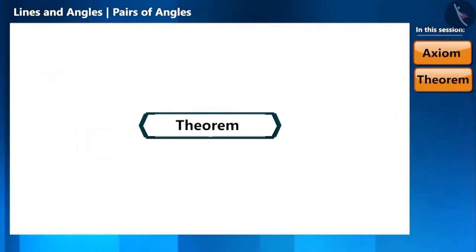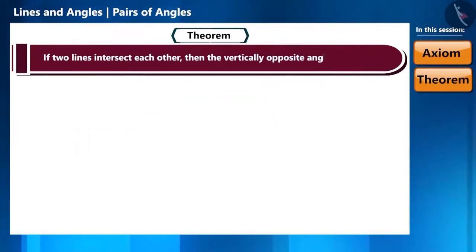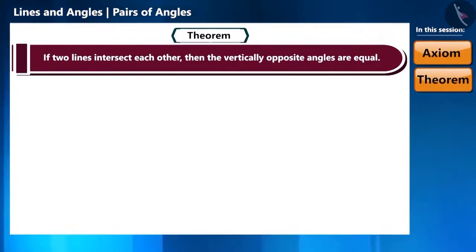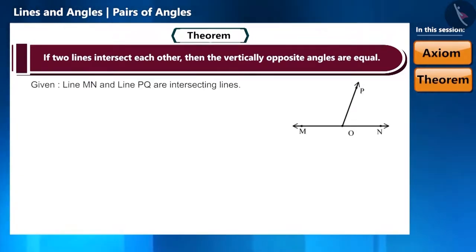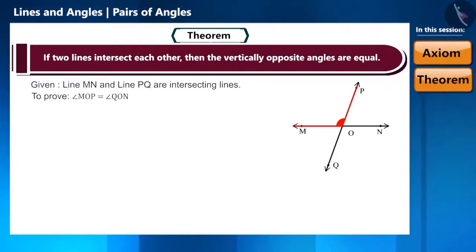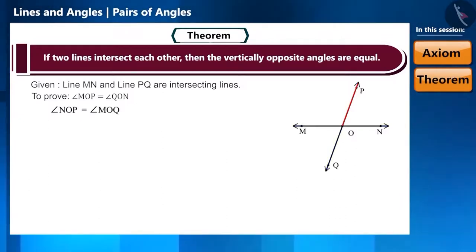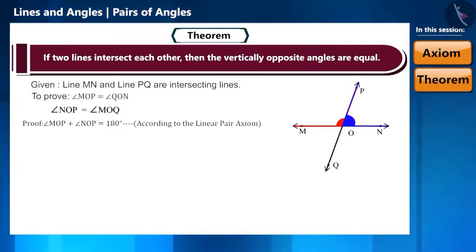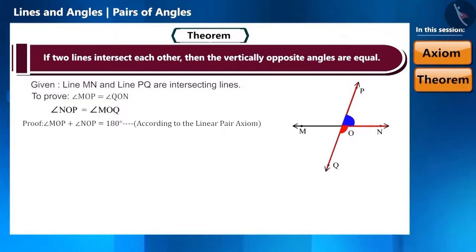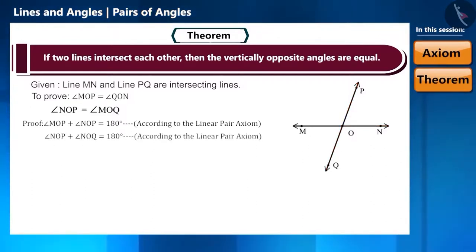We move on to the next theorem related to two lines: if two lines intersect each other, then the vertically opposite angles are equal. Let's convert ray OP into a line in the same figure. According to the theorem, we have to prove that angle MOP equals angle QON and angle NOP equals angle MOQ. Keeping ray OP in mind, angle MOP plus angle NOP equals 180 degrees according to the linear pair axiom. Similarly, taking ON as the ray, angle NOP plus angle NOQ also equals 180 degrees, again by the linear pair axiom.